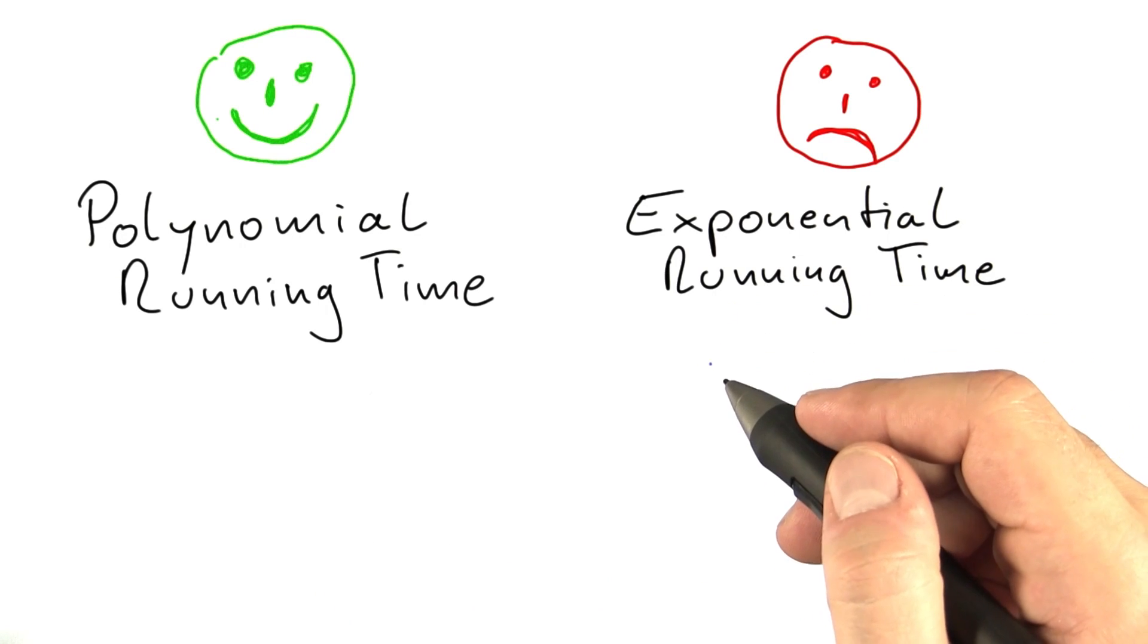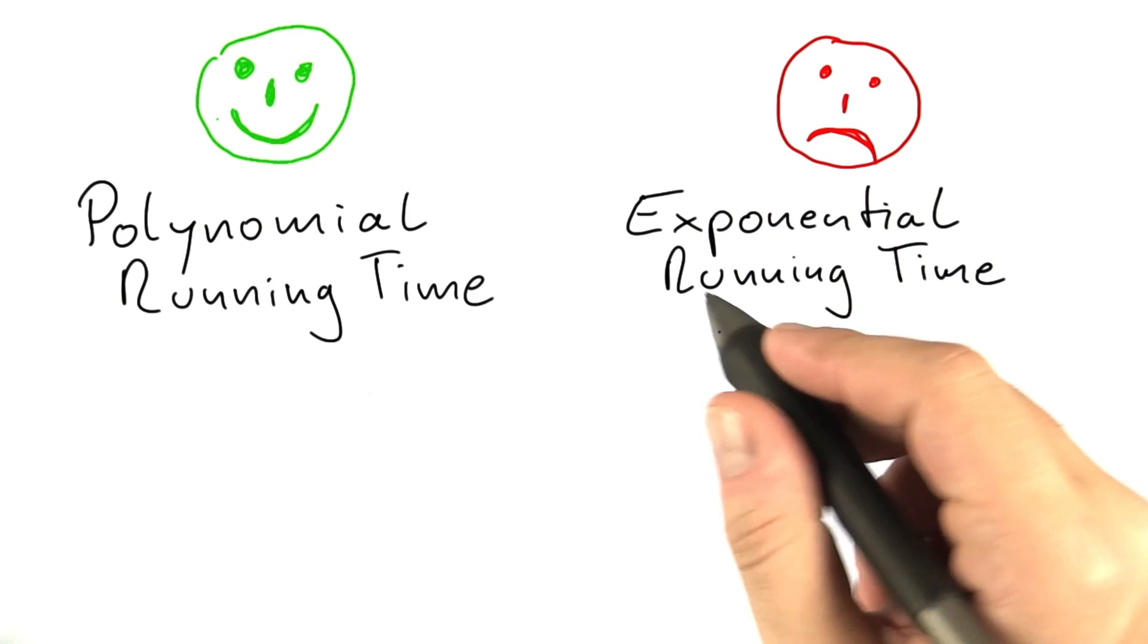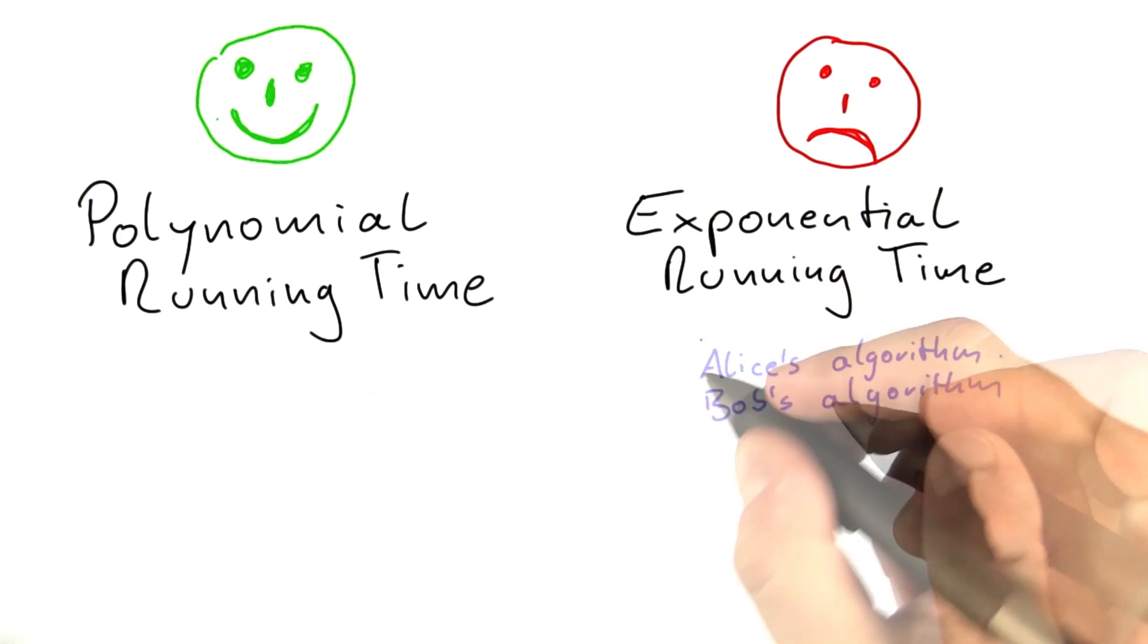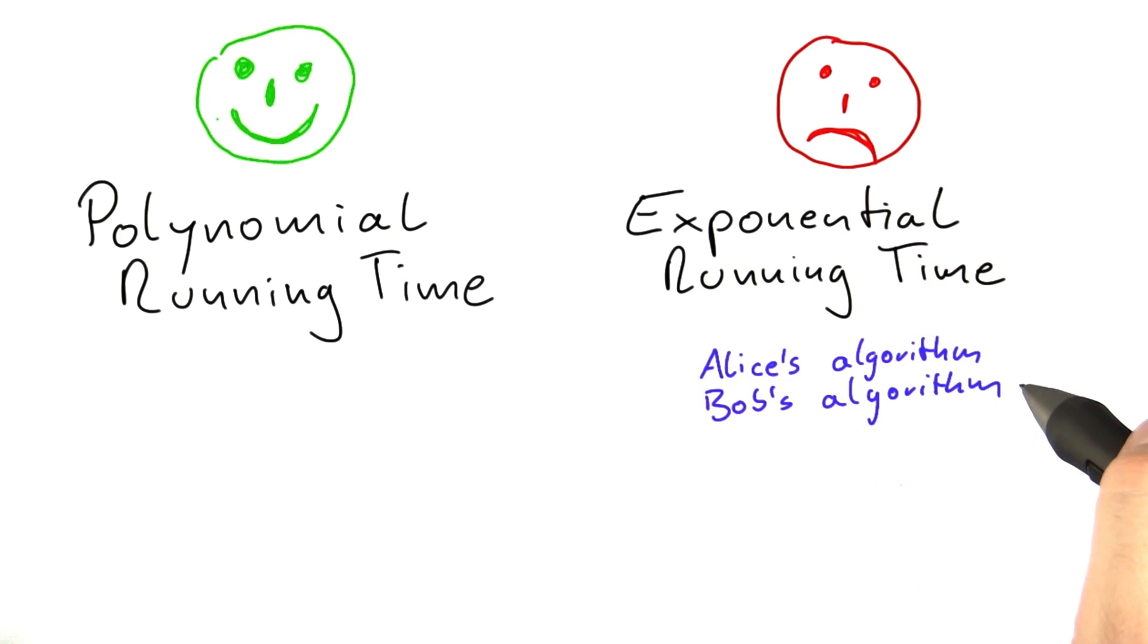So what both Alice and Bob have so far been able to find is they have found exponential time algorithms for their problem. And they haven't been able to come up with anything better so far.